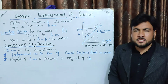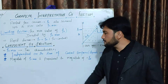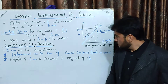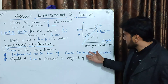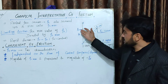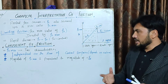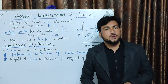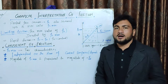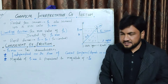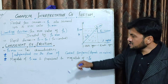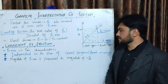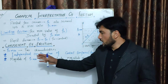Now we discuss the coefficient of friction. The fx maximum, which is the limiting friction, is the maximum value of static friction. The static friction has two characteristics related to the surfaces in contact.